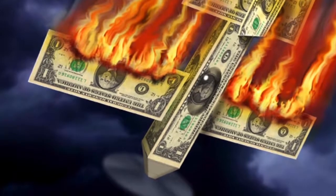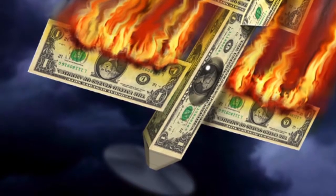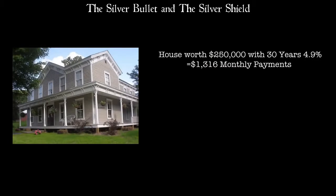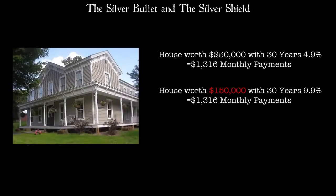What's your house worth without a 30-year mortgage? If you have a house worth $250,000 at 4.9% interest — ignoring down payment, taxes, or maintenance — your payment would be $1,316 a month. That is maybe something people can afford right now. But if we go through this dollar collapse scenario, which I believe is 100% mathematically inevitable, and interest rates are at 10%, you would have to sell that house for $150,000 to get that exact same payment.